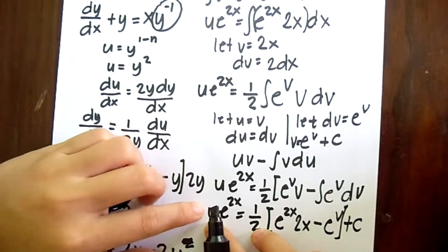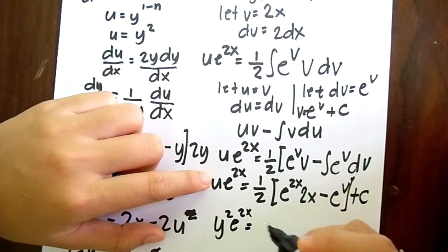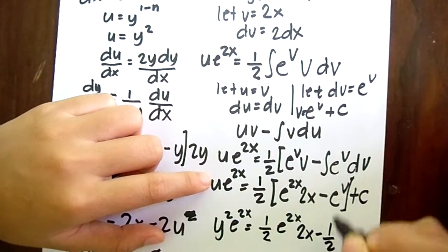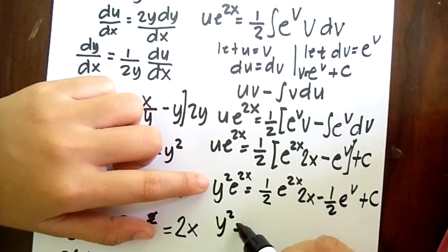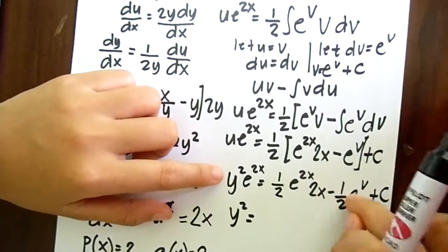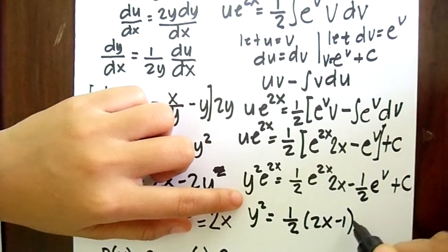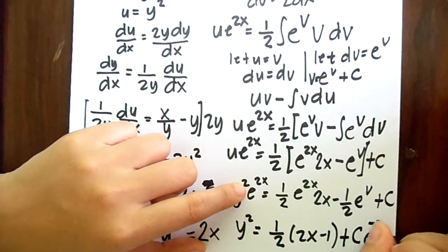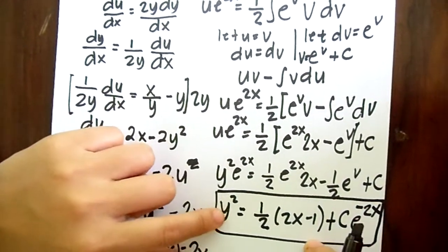So now we substitute our u to our value which is y squared. y squared e to the 2x equals one half e to the 2x times 2x minus one half e to the 2x plus c. So simplifying it, we divide by e to the 2x, and it becomes y squared equals one half times 2x minus 1 plus c e to the negative 2x. So this is now our final answer.